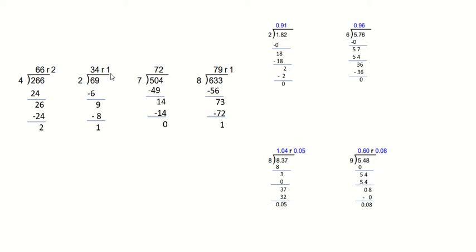You don't have to write a big R for remainder — you can simply write a small R when you write your answer. Our next problem is really simple with no remainders. 7 can't go into 5, but it can go into 50 — 7 times. 7 times 7 is 49. Subtract: 50 minus 49 gives us 1. Bring the 4 down and divide again — 7 goes into 14 two times. 2 times 7 equals 14. Subtract: 14 minus 14 leaves 0.